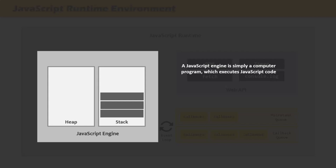Every browser has its own JavaScript engine. For example, V8 is the JavaScript engine for Google Chrome, SpiderMonkey is the JavaScript engine for Firefox, and JavaScriptCore is the JavaScript engine for Safari. Probably the most well-known engine is Google's V8, which powers Google Chrome and is also used in Node.js for executing JavaScript code.